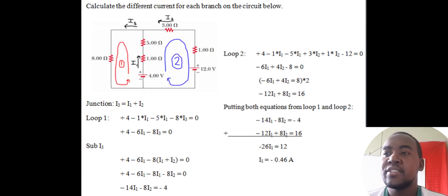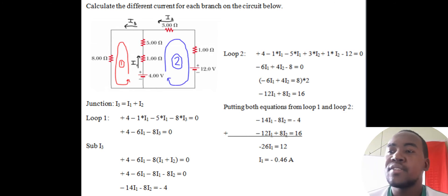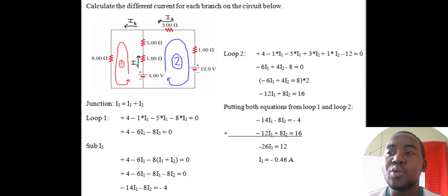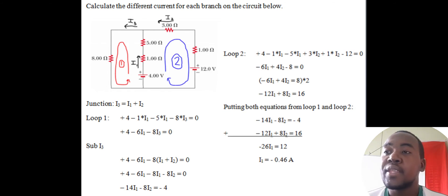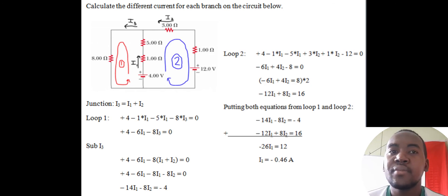For question 3, the circuit has three different branches and we need to find the current in all three. No current directions were given, so I chose: I1 going up, I3 going to the left, and I2 going to the left as well. At the junction, I1 and I2 combine, so the junction rule gives I3 = I1 + I2.